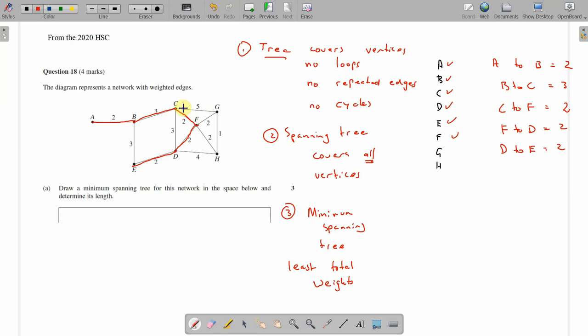D to E is two and now E's covered. We've got vertices G and H to cover now. I'm going to keep in mind that one there, so probably what I'll do is go F to G which is two, and then use the one there, G to H is one.